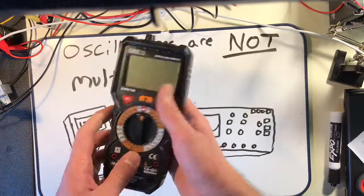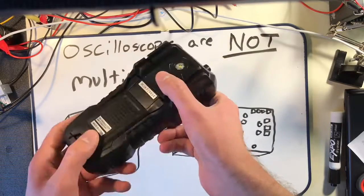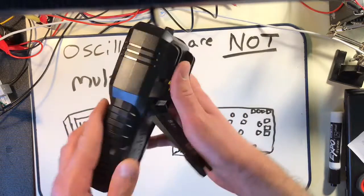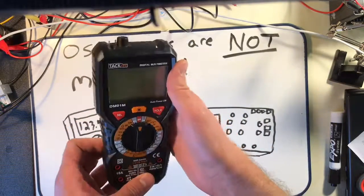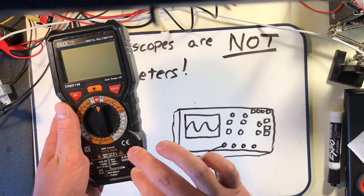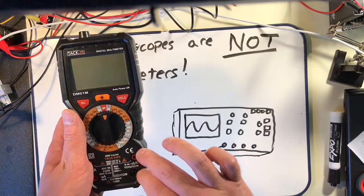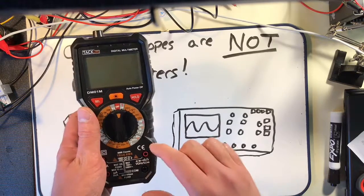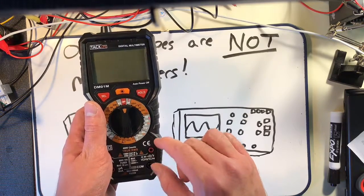Your average multimeter is going to not only be isolated, it's going to have its own battery system, so it's an isolated power supply inside of this.